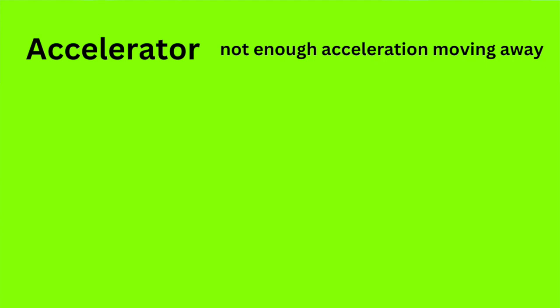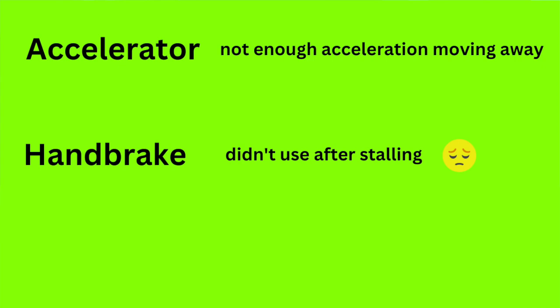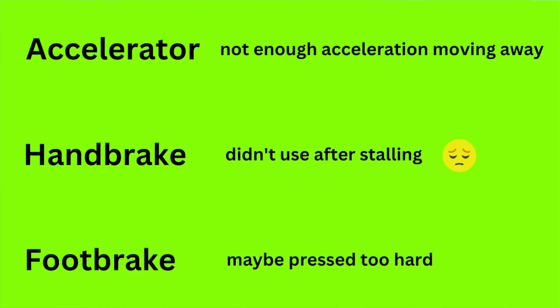He lost the handbrake mark because after he stalled he only used the foot brake and didn't apply the handbrake — which could have led to roll-back or roll-forward. If you stall the car, it's very important to pull up the handbrake first to secure it, because you might be in a bit of shock. Get the handbrake up straight away, then get started back up and into first gear. As for the foot brake mark, he thinks he may have braked a little too hard — probably due to nerves or panic after the stall.